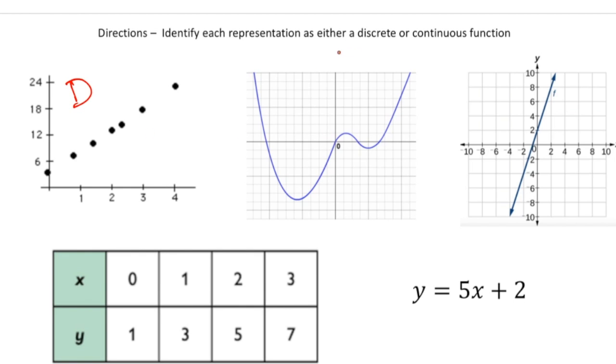The second one here, notice I can trace over the entire graph without lifting up the pencil. And I'm going to assume that there's arrows here at the end. Because of that, this is going to be continuous. The third one, again, notice there's arrows at the end of the graph. That means it's going to go in both directions continuously forever. It's a nice straight line and it goes on forever. So it's linear. So this is going to be continuous.